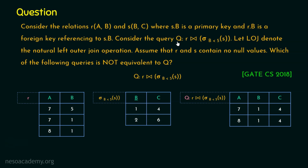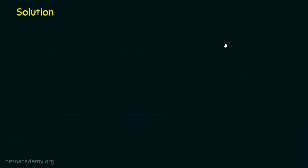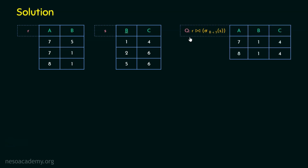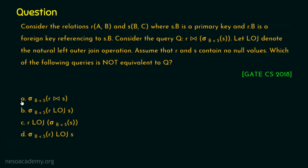We have generated the output for query Q: rows (7,1,4) and (8,1,4). Now we will evaluate all options A, B, C, and D, get the output for each query, and compare with this output to determine which one is not equivalent to Q.